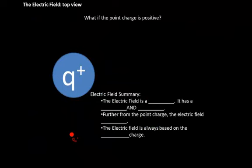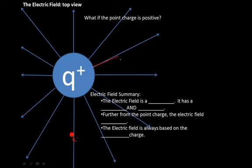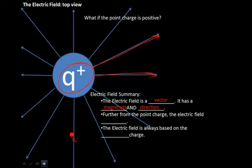What if a point charge is positive? Notice that now the lines of force move away from the large positive point charge. The electric field is a vector with both magnitude and direction. Further from the point charge, the electric field decreases. And the electric field is always based on the positive charge.